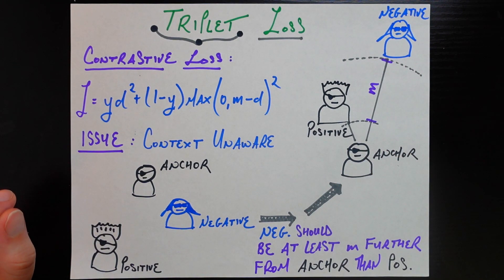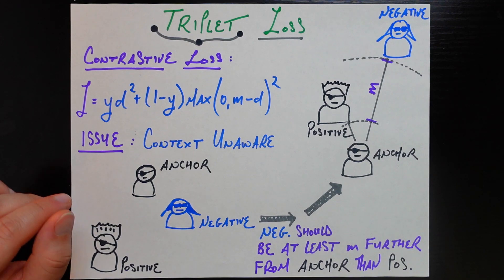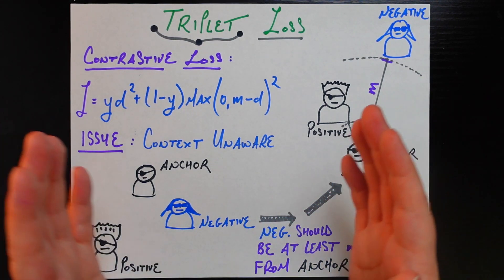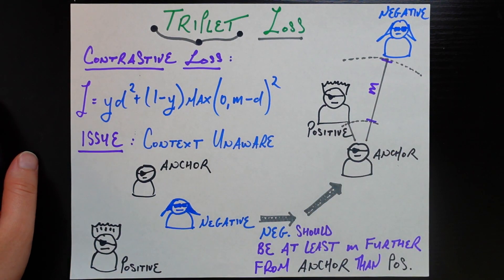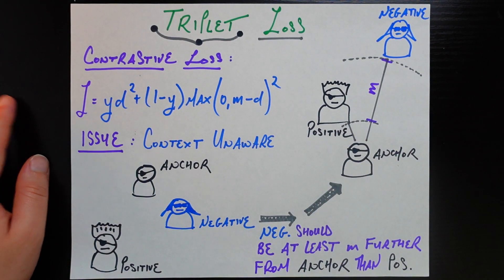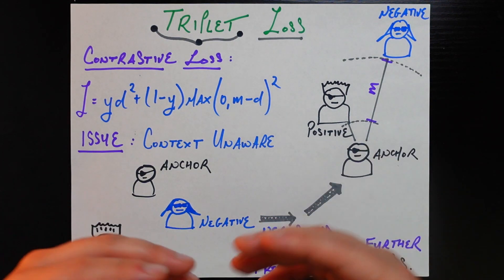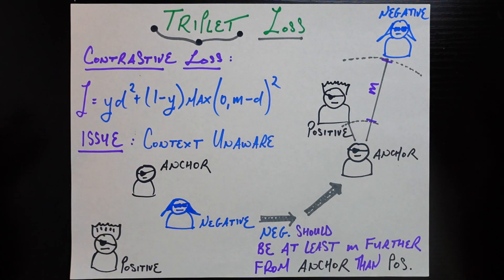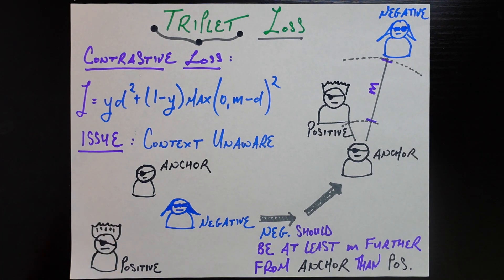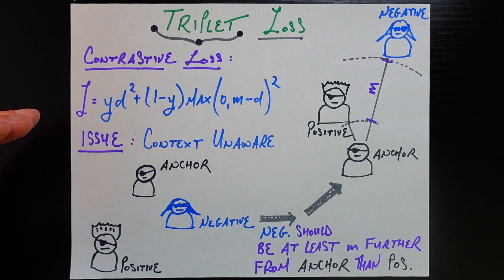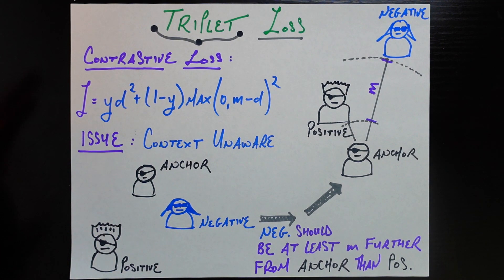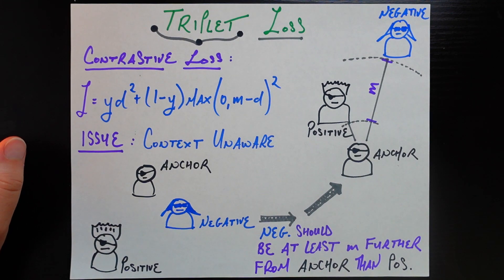It's important for whatever loss function we use to have the property that embeddings for pictures of the same person end up close to each other in the embedding space, and embeddings for pictures of different people end up far away from each other. Using that, in the last video we talked about contrastive loss, which somewhat achieves that goal.